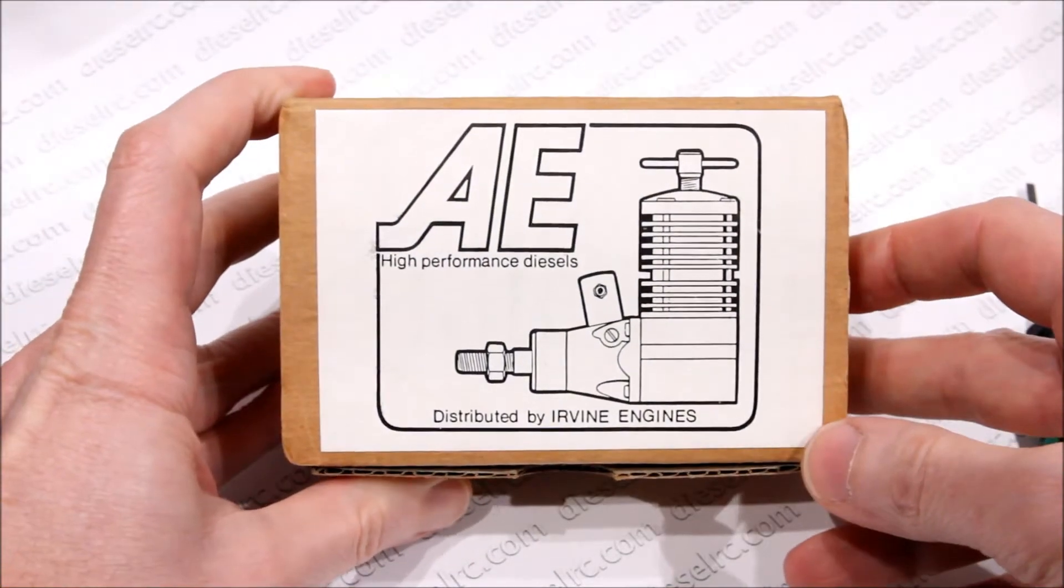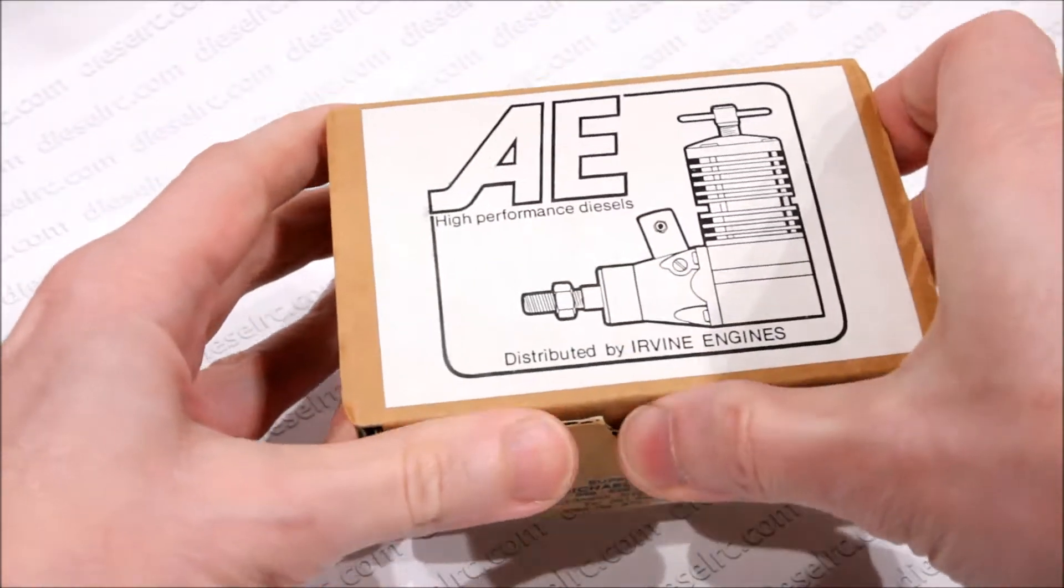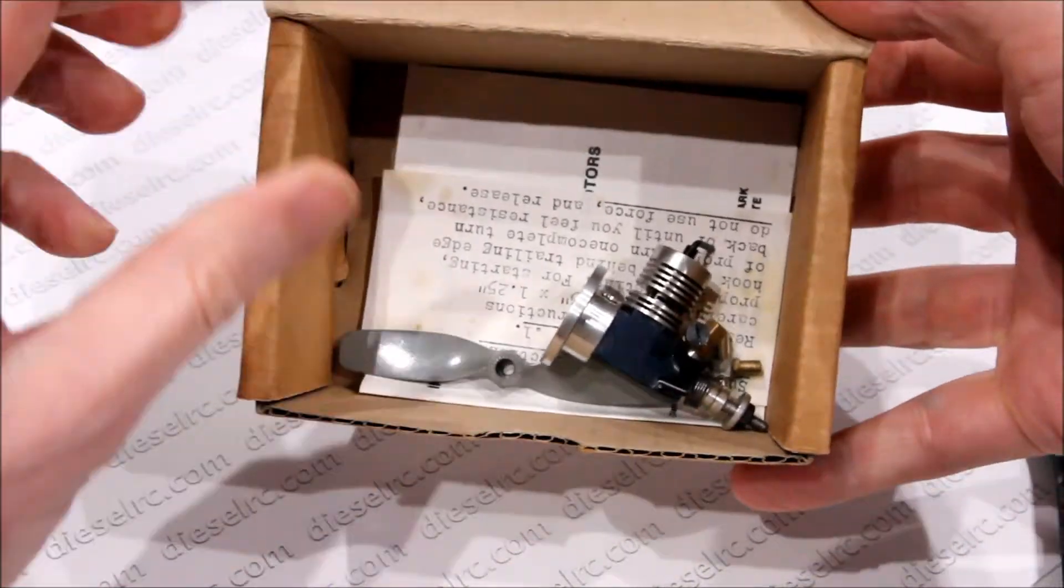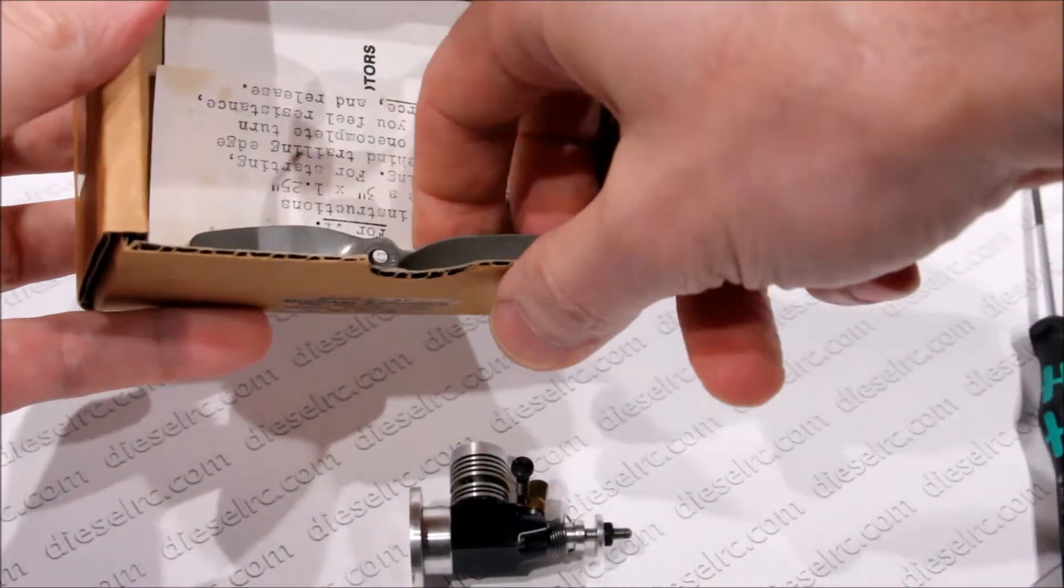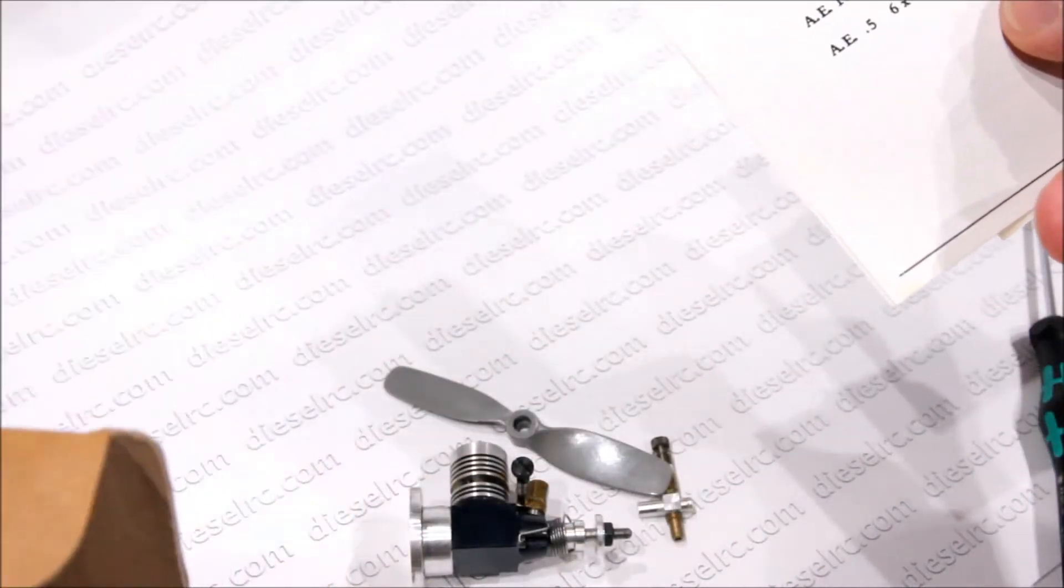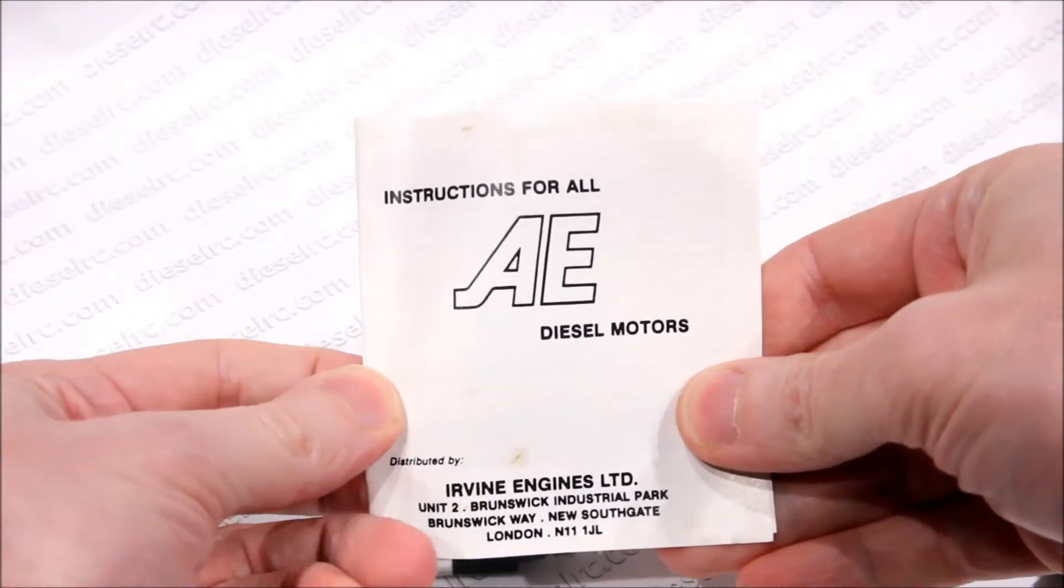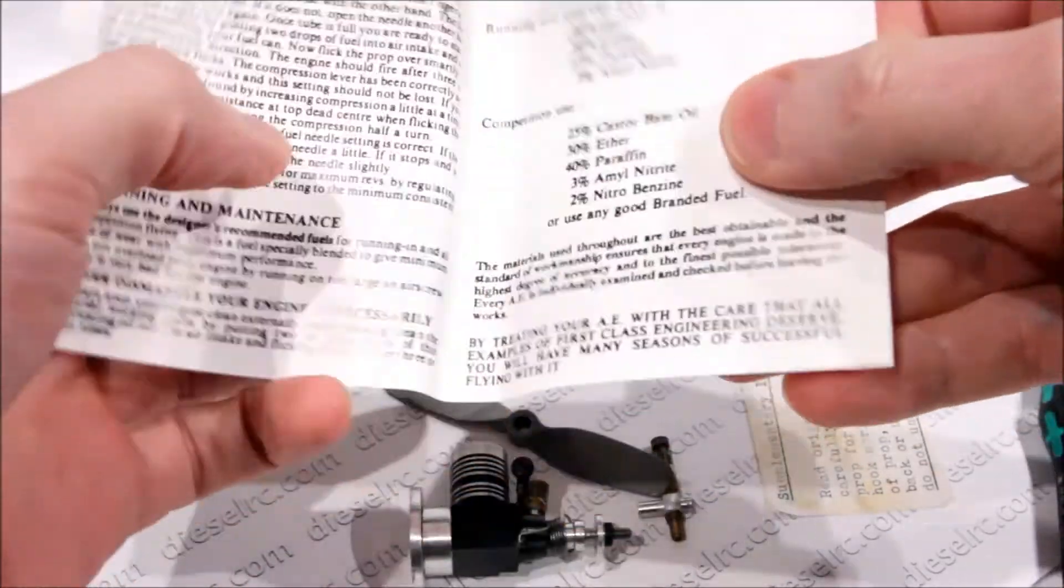Let's have a closer look at the AE 0.1 cc diesel engine. The instruction manual included is general for all engines in the series.